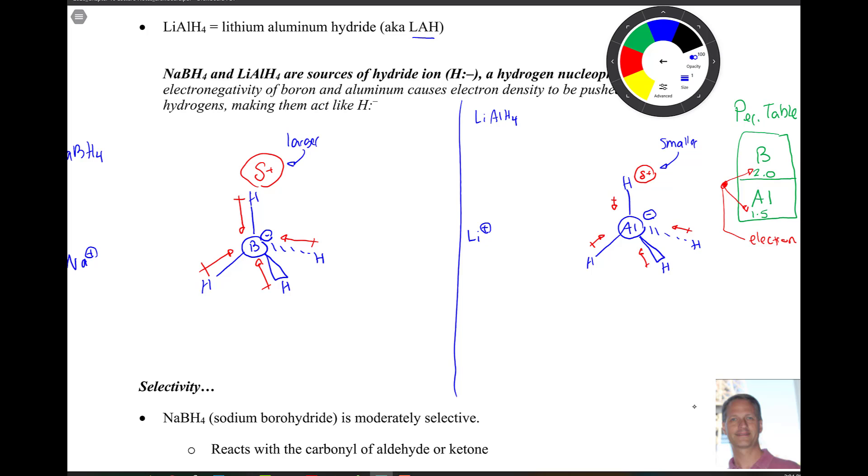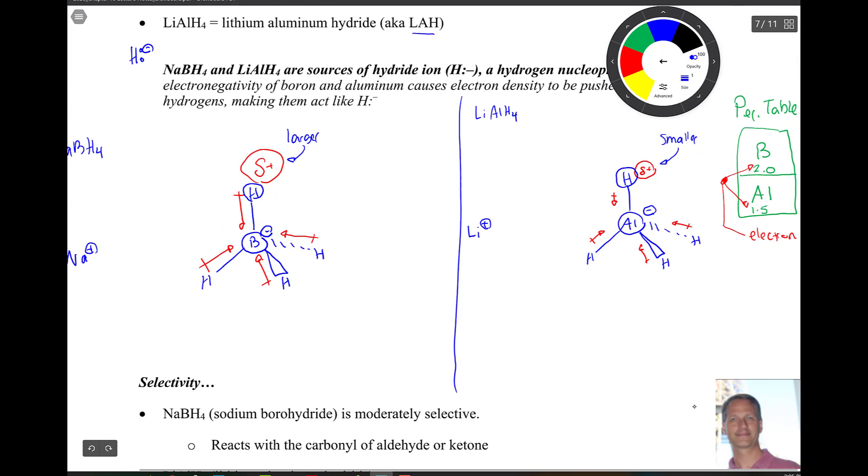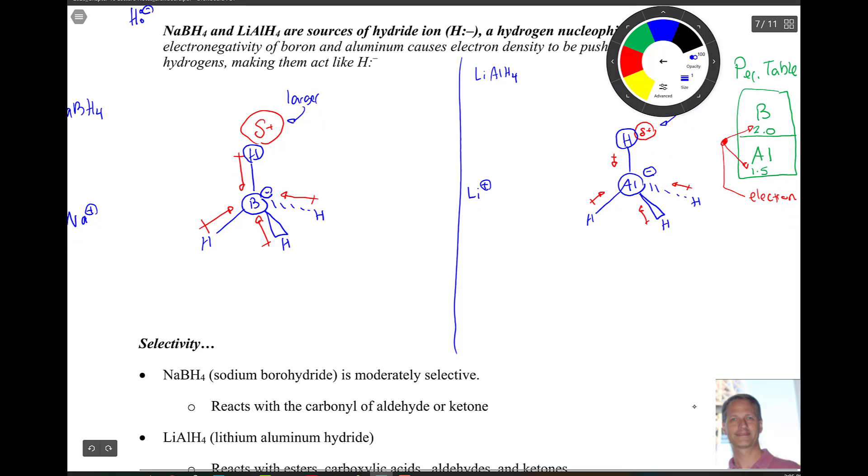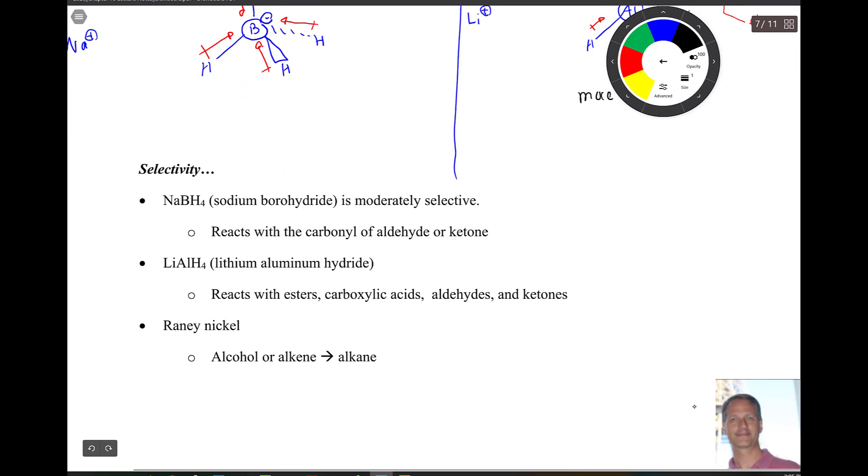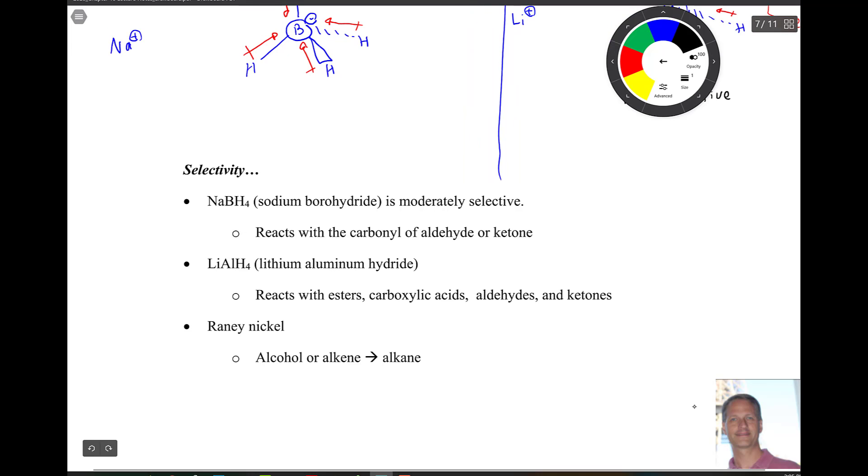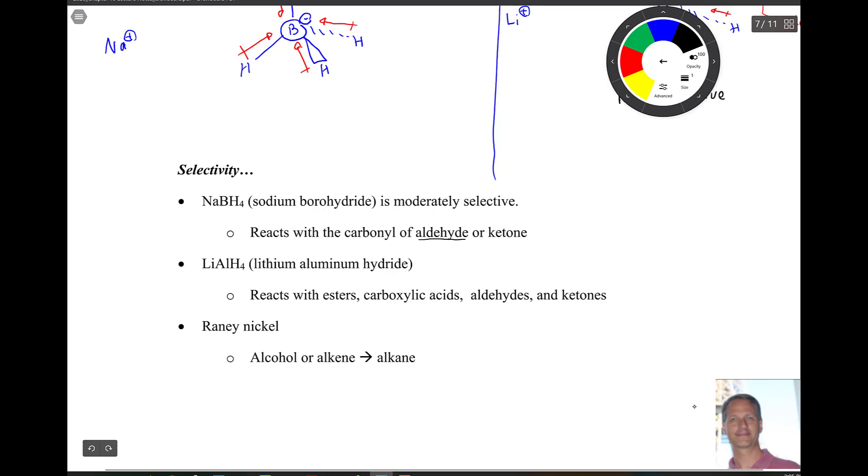So the idea is we have a larger delta plus here and a smaller delta plus there. So a smaller delta plus is a good thing on that atom and the hydrogen atoms because, remember, we want to have a source of H minus. So if your H atom has more of a plus charge on it, delta plus, then it's just not as reactive. So there's a difference in selectivity of these things. So the LAH is more reactive. This is more reactive than NaBH4. So as far as selectivity, NaBH4 reacts with carbonyls of aldehydes and ketones, and LAH reacts with basically everything.